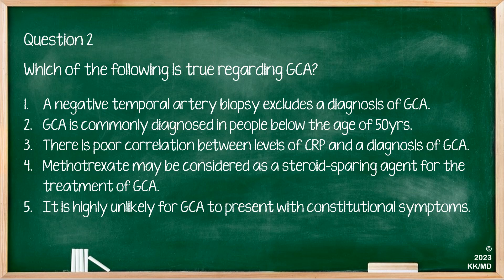Option 5 is incorrect — it is not highly unlikely for GCA to present with constitutional symptoms such as fever, weight loss, or anorexia, given that it can present as a spectrum with polymyalgia rheumatica (PMR) and other types of large vessel vasculitis. Therefore, the correct and true statement is option 4.